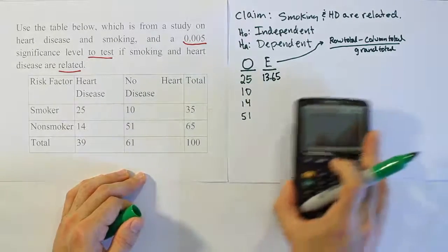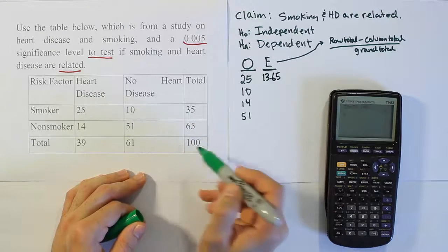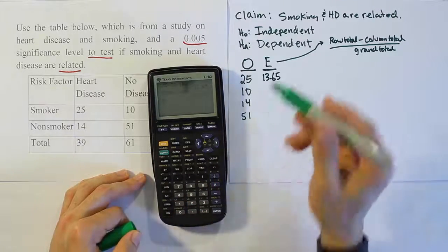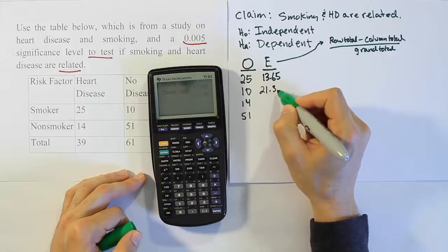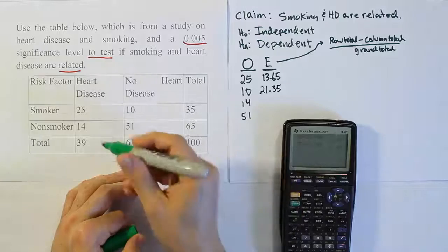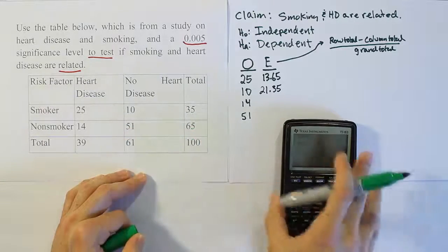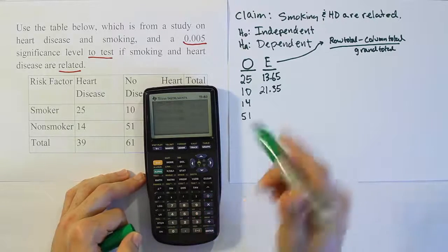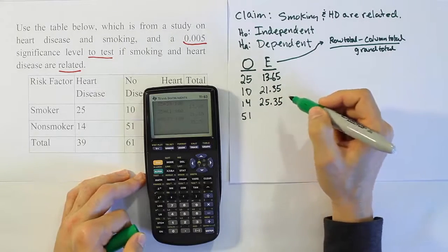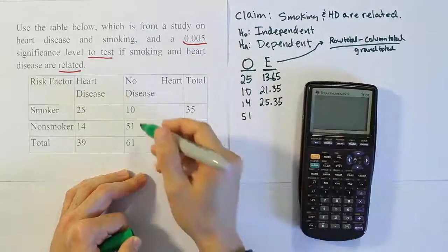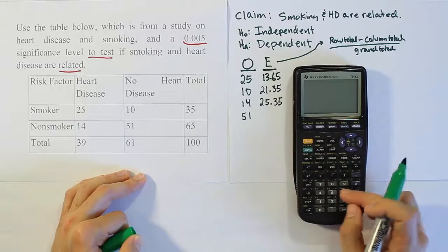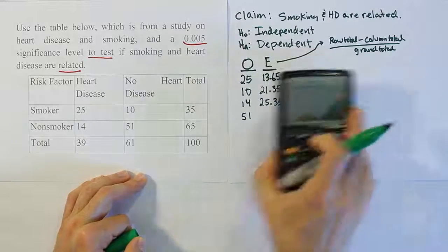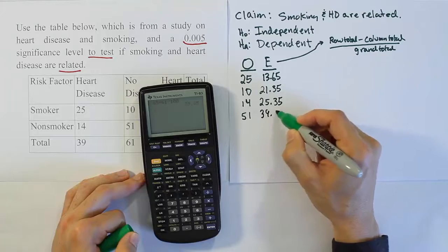We're going to do the same thing for the category where 10 is. That's going to be 35 for the row total, 61 for the column total divided by 100. So 35 times 61 divided by 100, we get 21.35. For 14, it'll be 65 times 39 divided by 100, and we get 25.35. And lastly for 51, we'll have 65 times 61 divided by 100, and we get 39.65.